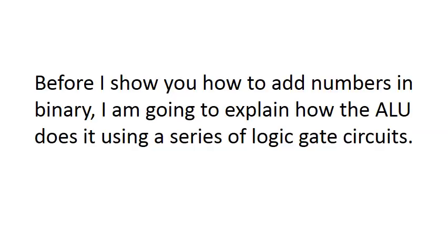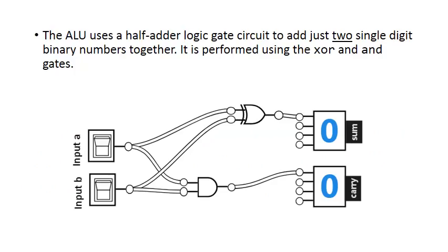Before I show you how to add numbers in binary, I'm going to explain how the ALU does it using a series of logic gate circuits. The ALU uses a half adder logic gate circuit to add just two single digit binary numbers together. It is performed using the XOR and the AND gates.